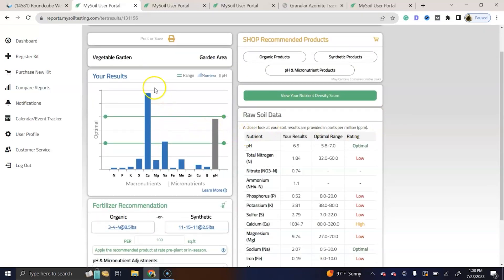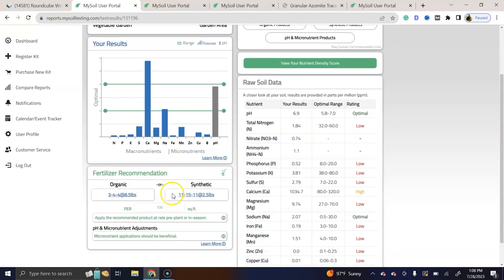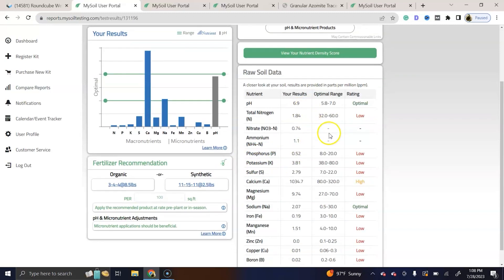On the left side, you have a nice graph that you can use along with the recommendations, whether you're going organic or synthetic for your fertilizer. And when you click these links, it will take you to a shop where you can purchase your fertilizer. Then here on the right side is all of your raw data.